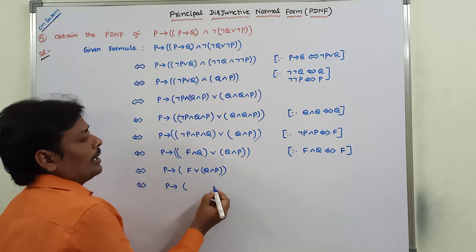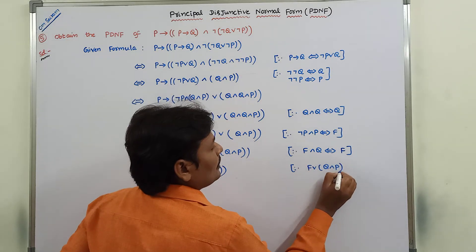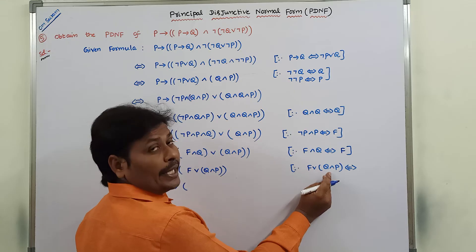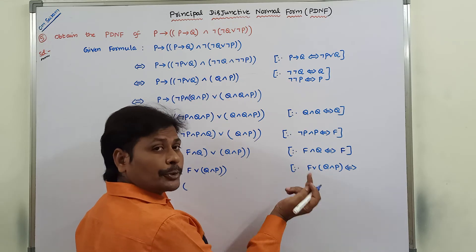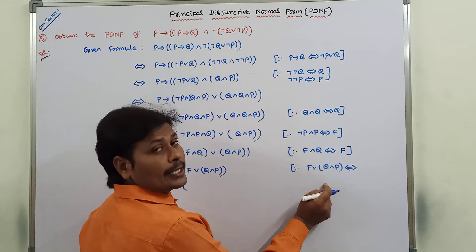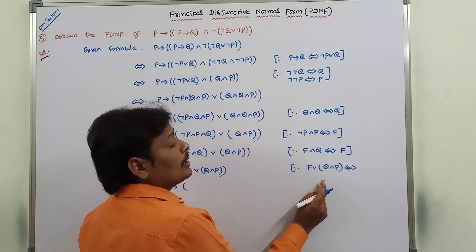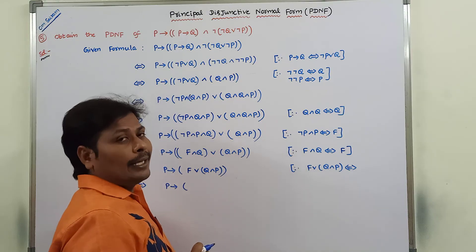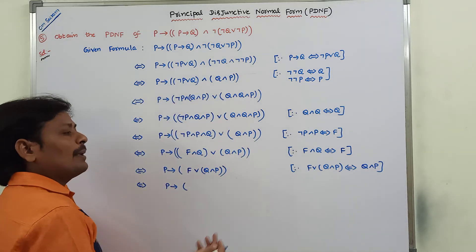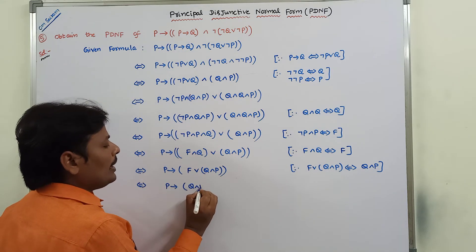So we have false OR (Q and P). False or Q and P — whatever value we substitute in place of Q and P, we get the same truth value back. False or true is true, false or false is false. So false or Q and P is logically equivalent to Q and P. That means false or something is nothing but something. Here we are getting Q and P.